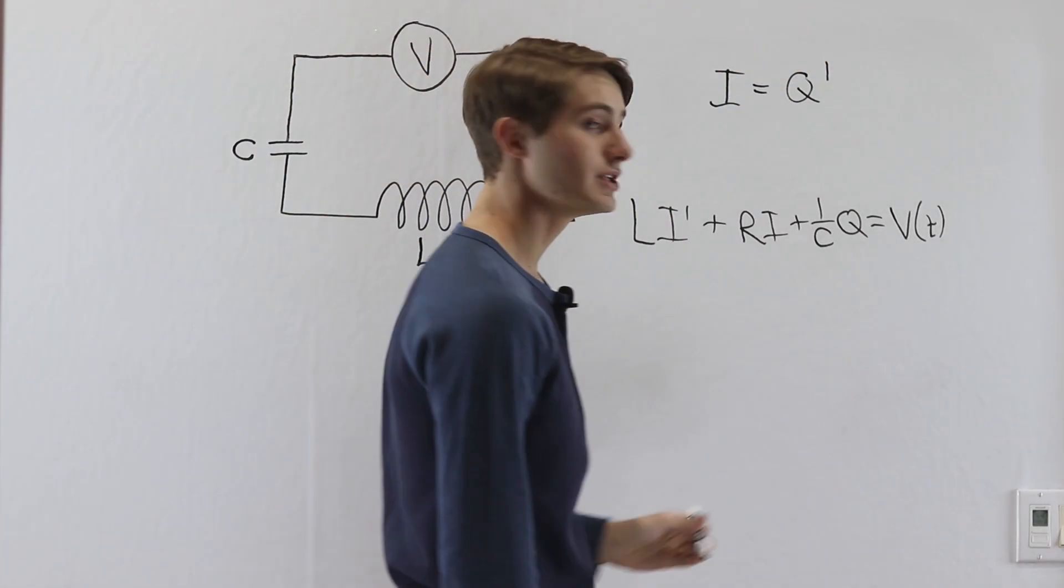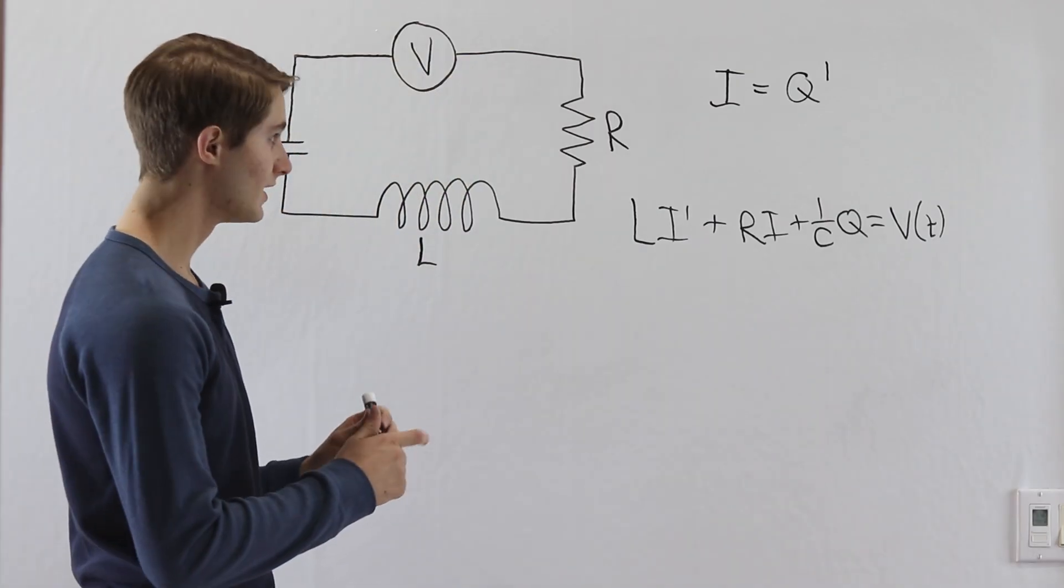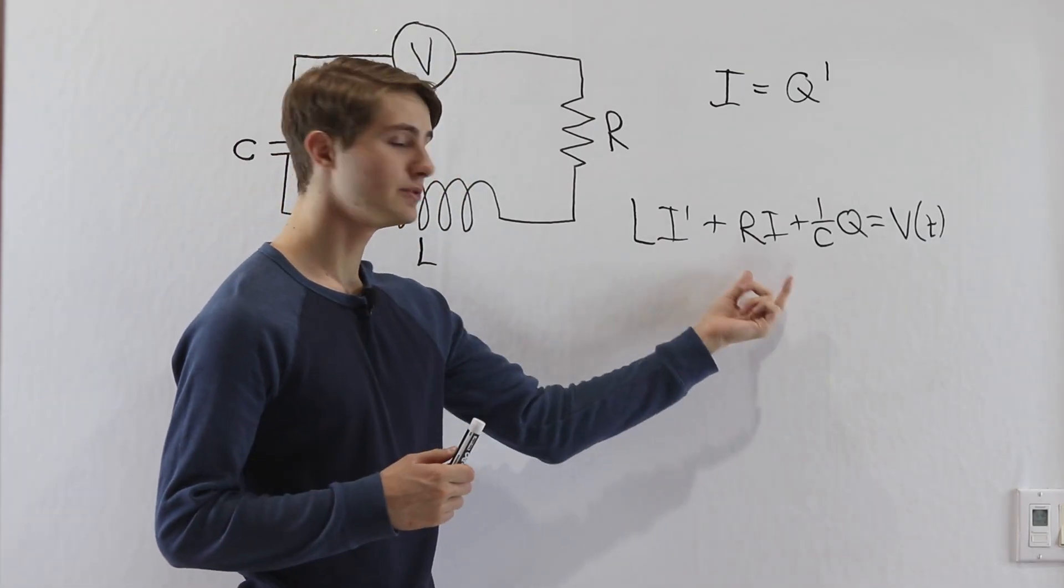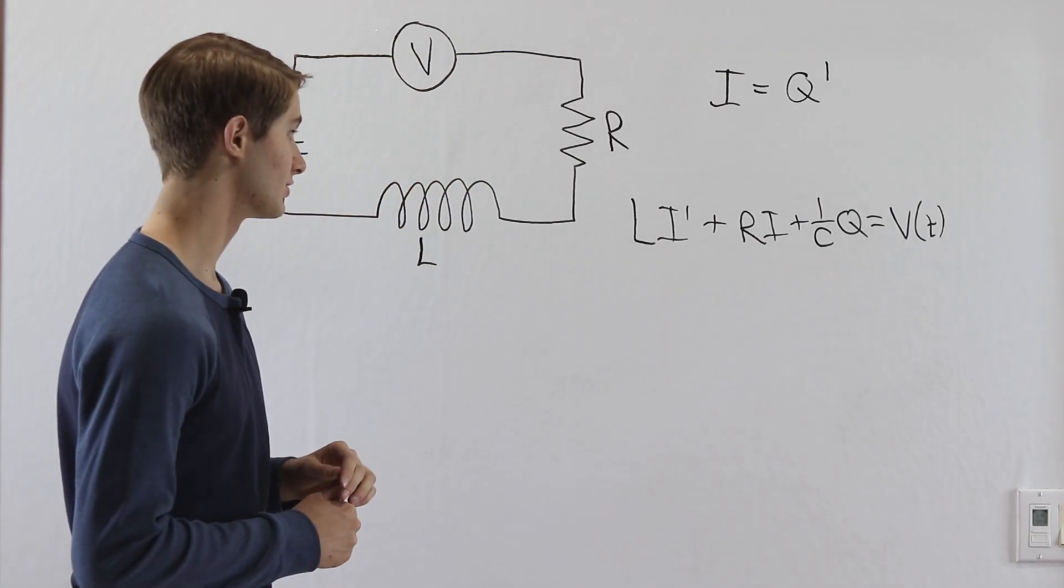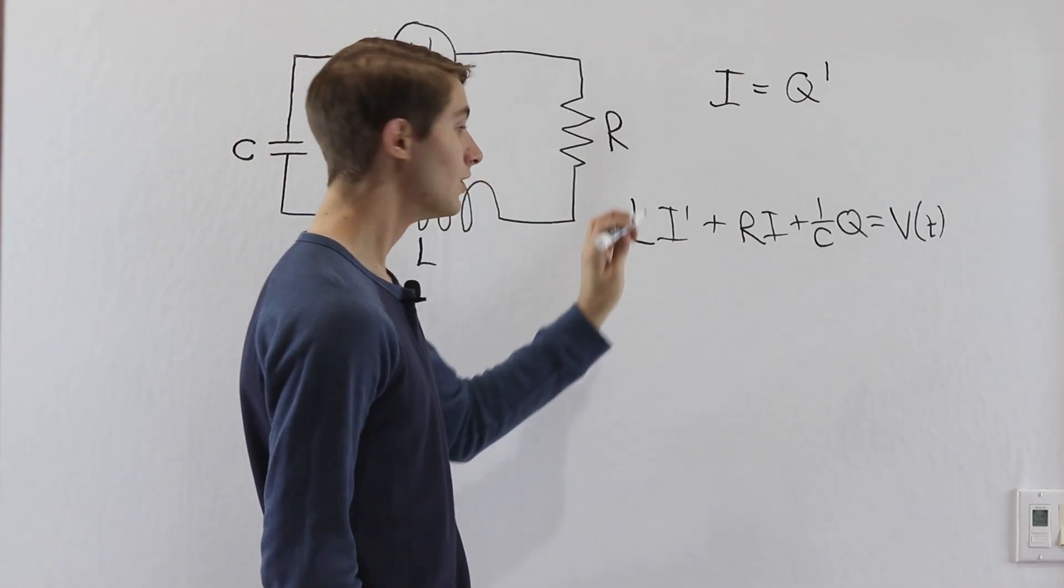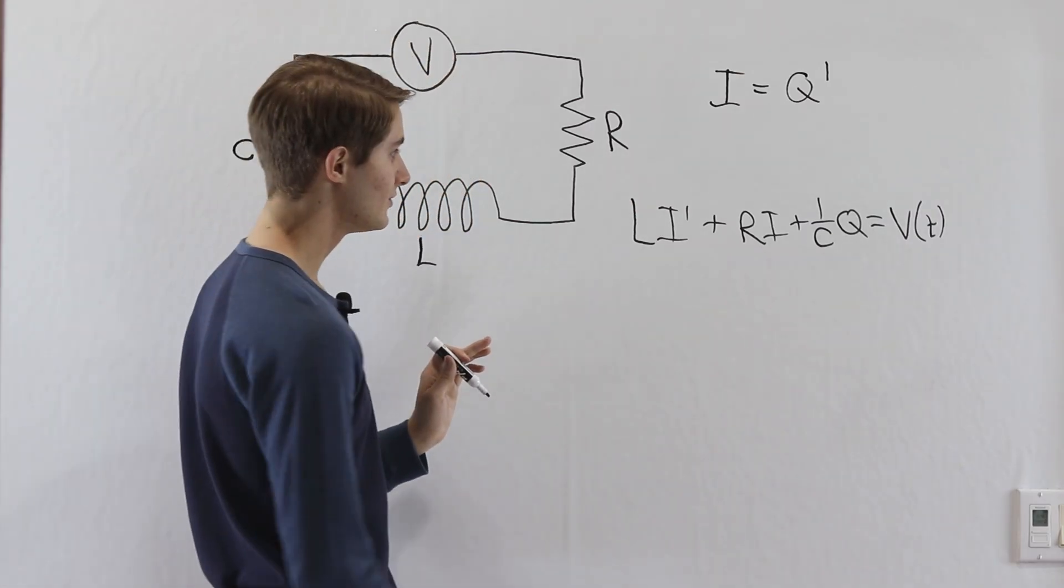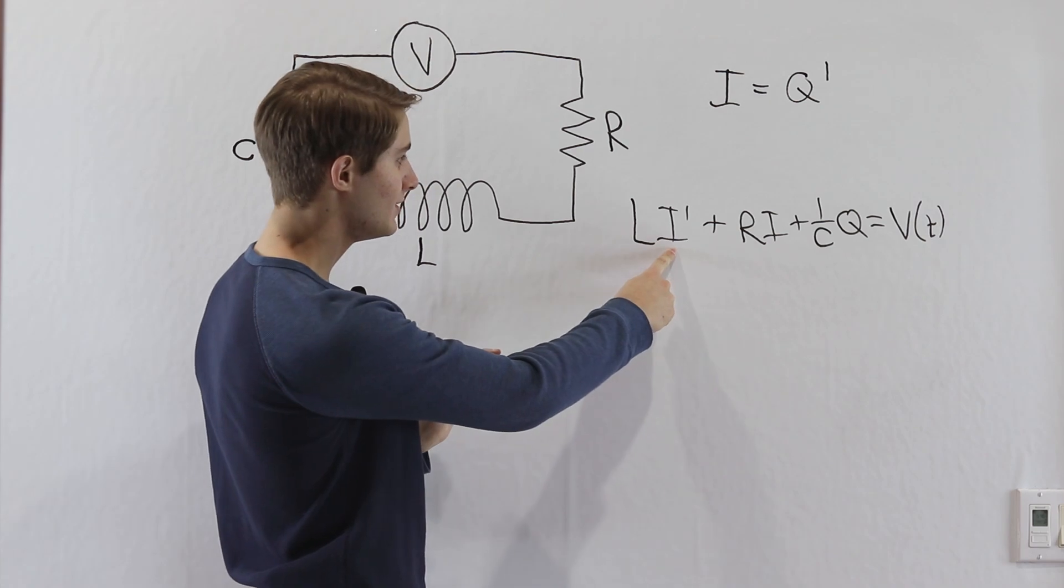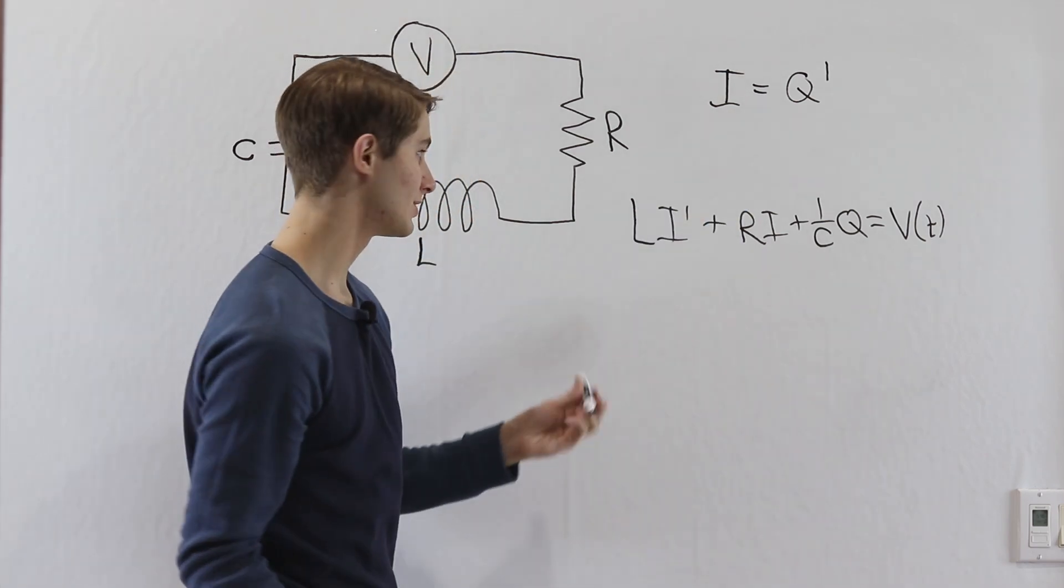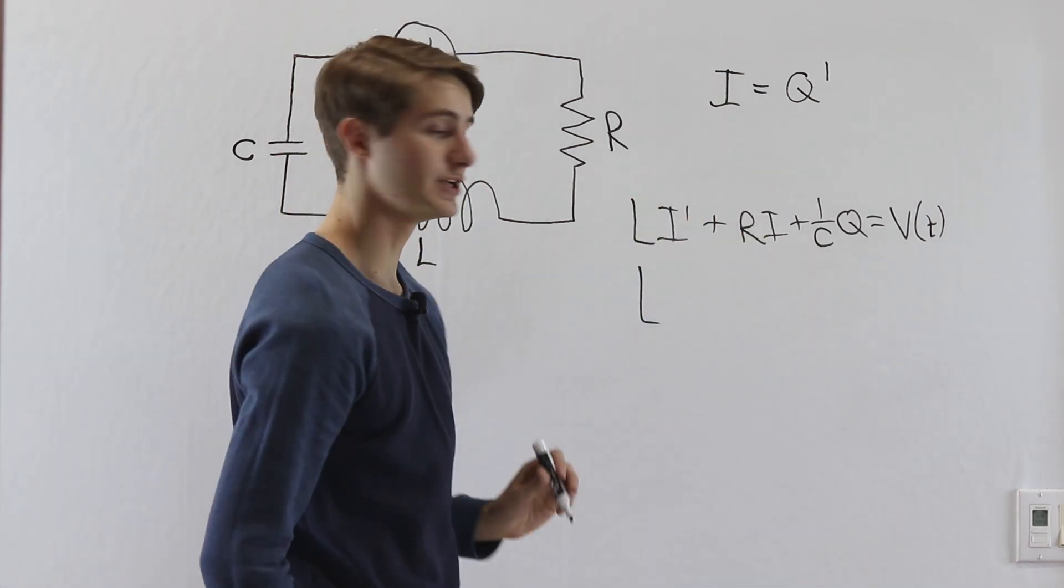So I is actually equal to Q prime, and that means that there are two different ways that we can express this differential equation, and I'm going to write them both here. One way we can do this is we can write I prime as Q double prime and write this whole differential equation in terms of Q.